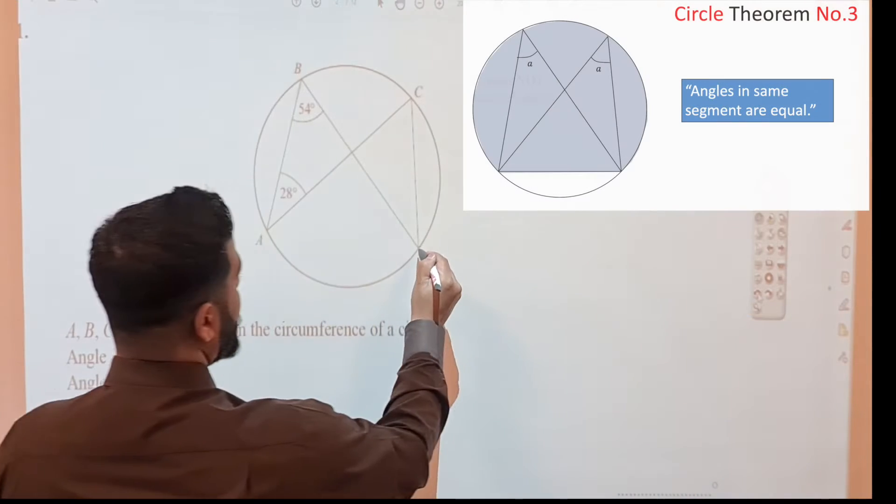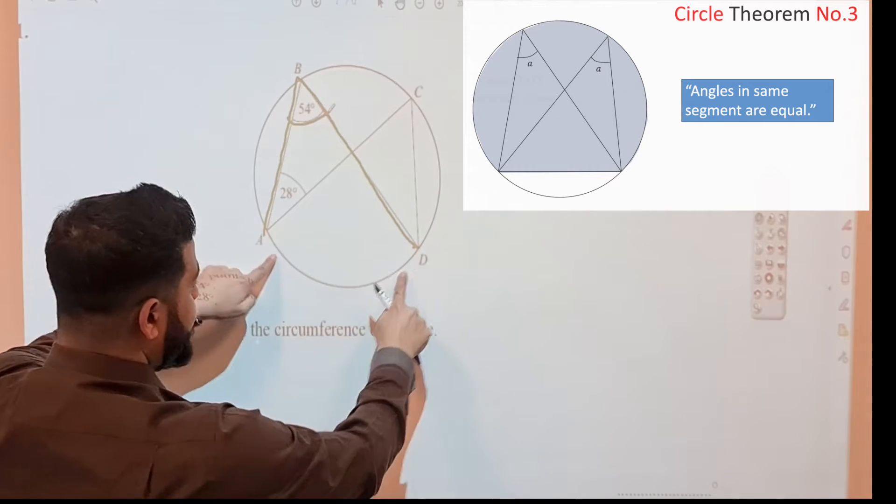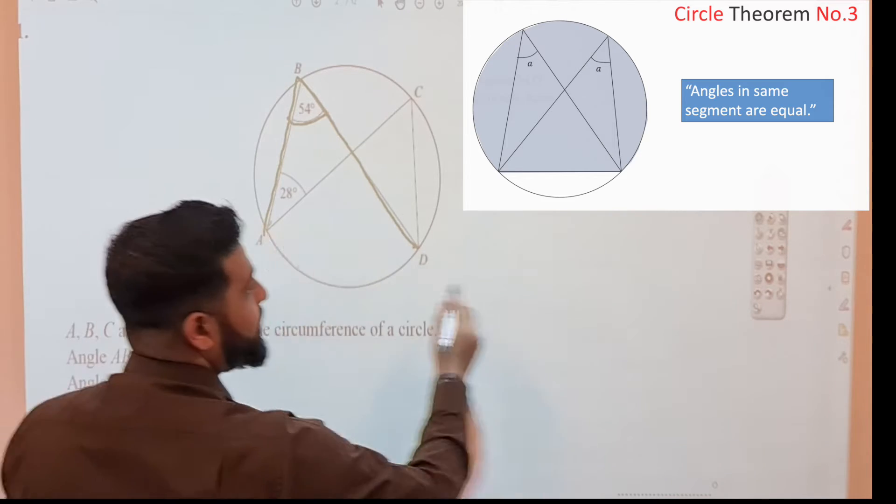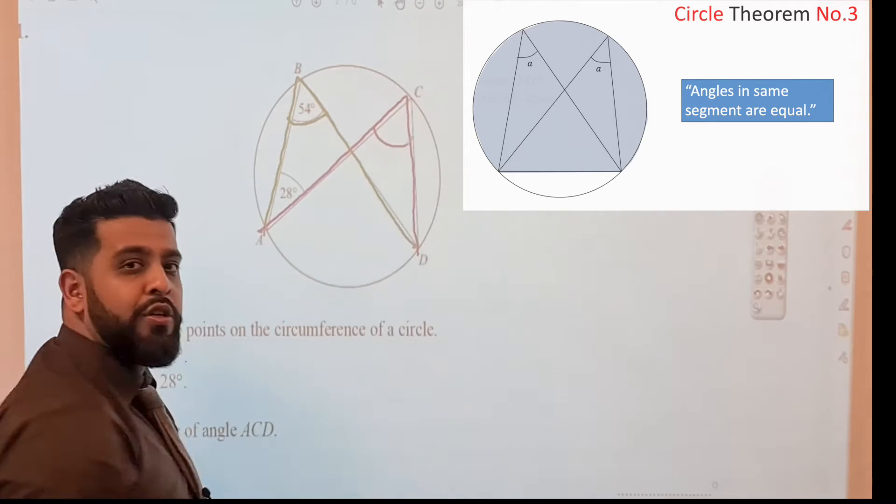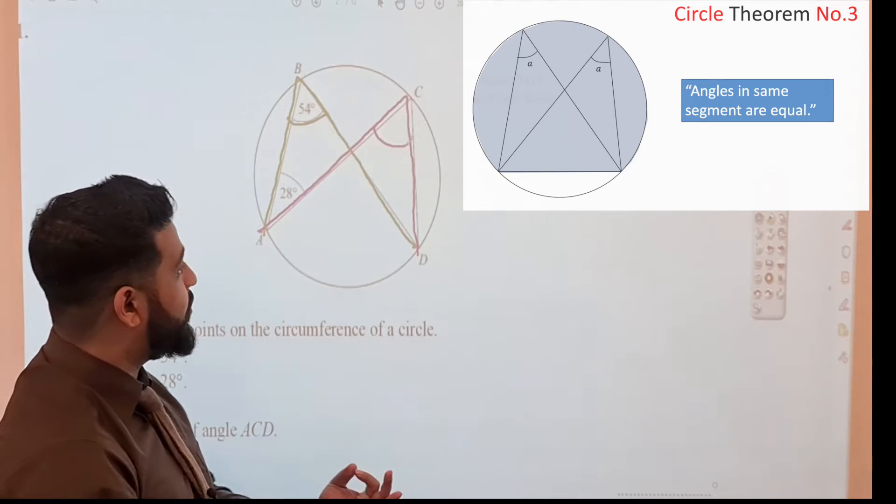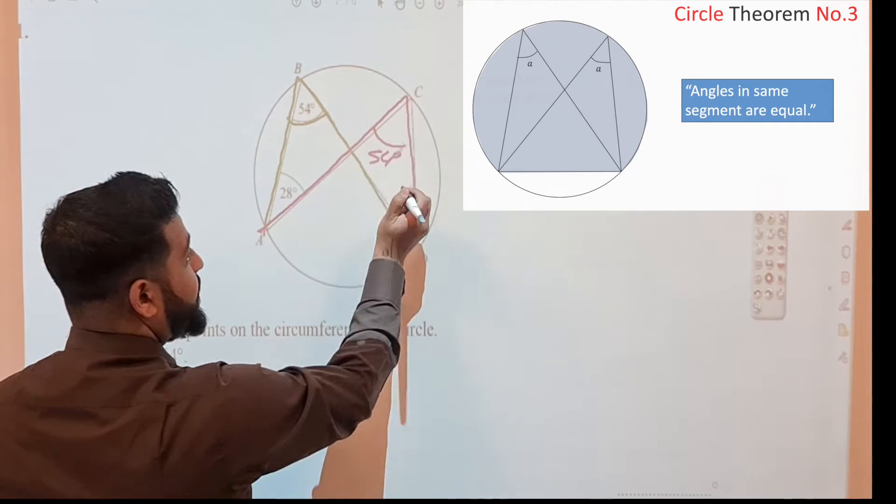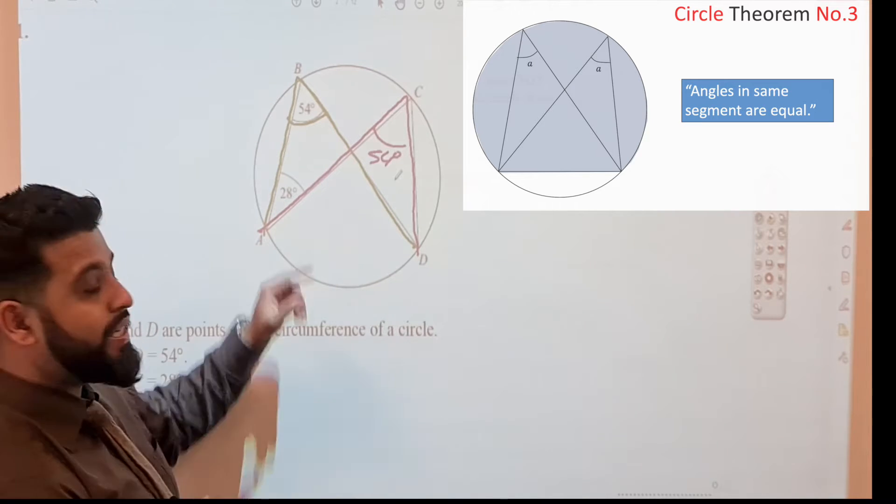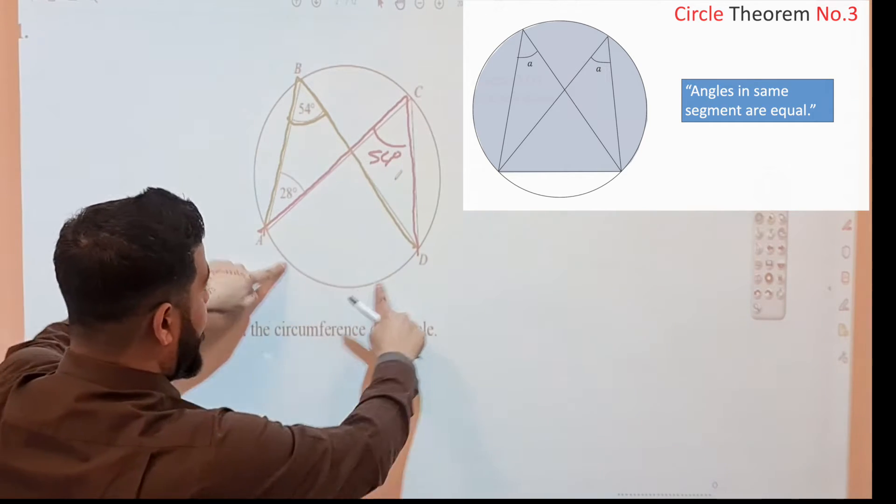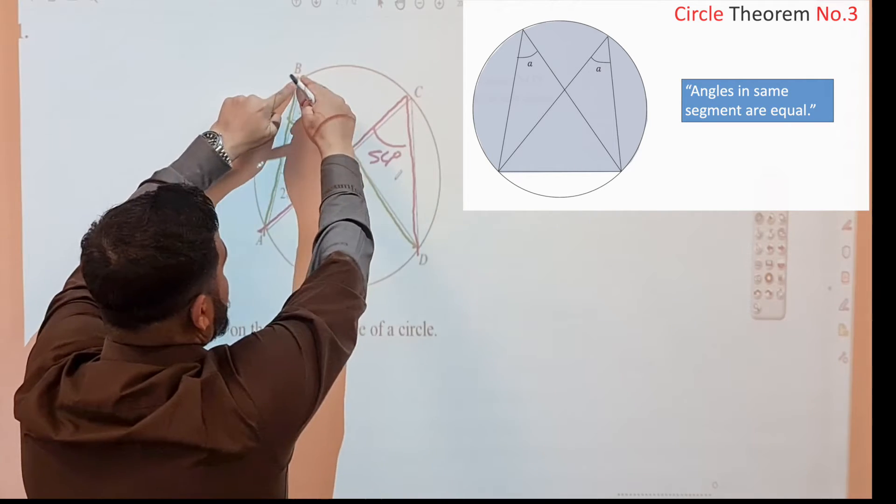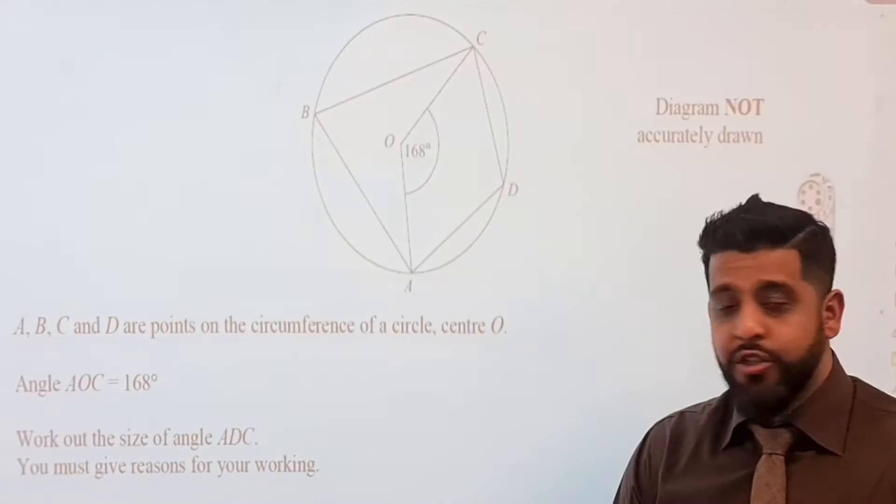We can see here that we've got this angle as 54 degrees. Now this here is an arc and from those same two points we have two other lines that go and meet at the circumference. If you remember one of the circle theorems, it states that angles in the same segment are equal. So this is also going to be 54 degrees as well. So this 28 was just misleading us, it was just there to try to throw us off.